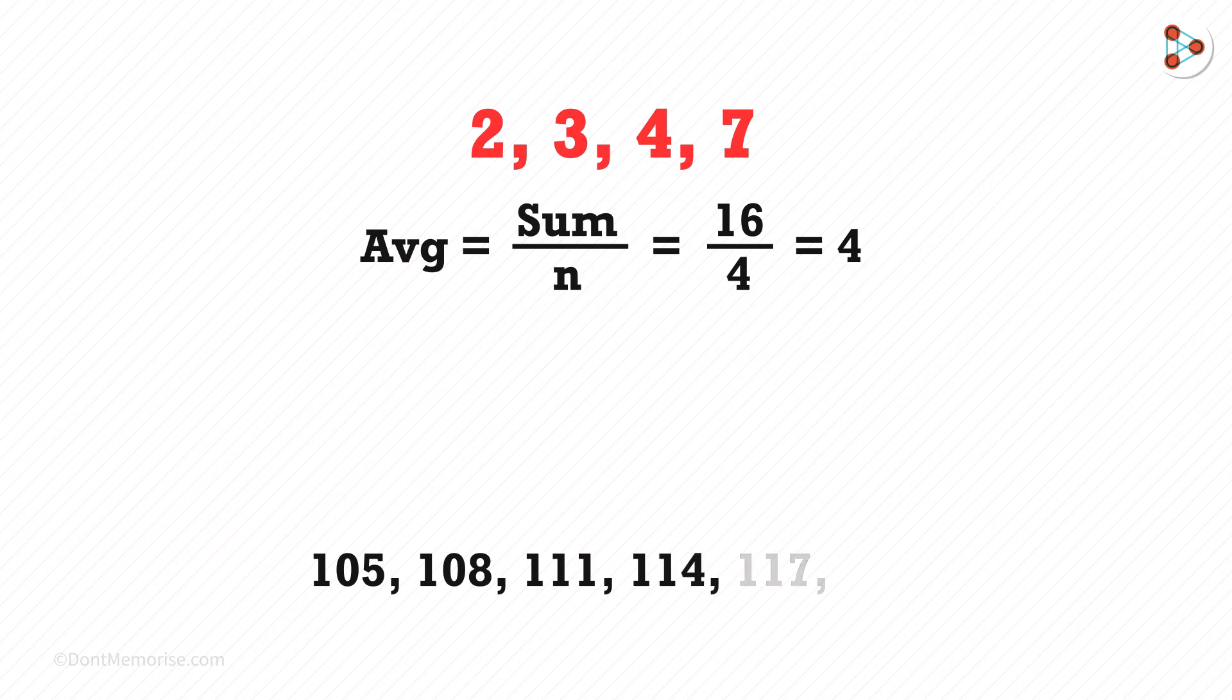Now look at these 6 numbers. If you try to find the sum of these numbers then it'll take us a lot of time. So what's the solution for this? If you observe closely you'll see that all the numbers differ from each other by 3. This plus 3 gives us 108. This plus 3 gives us 111 and so on.